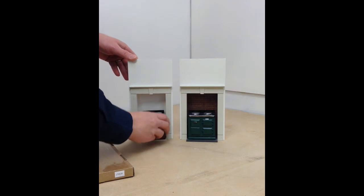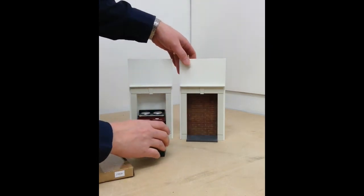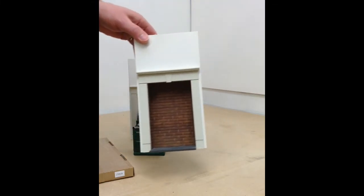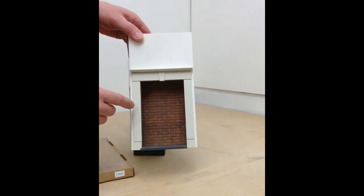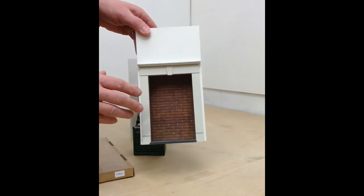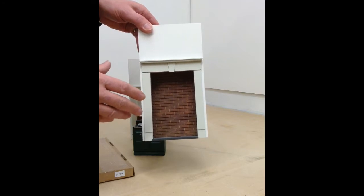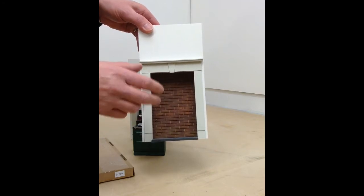Secondly is the bricked Argo Surround. With this one we've cut the brickwork directly into the panels. It then needs painting, which we'll go through in another video. But it assembles just the same way as the plain one, only you've got the brick effect.